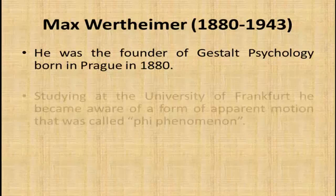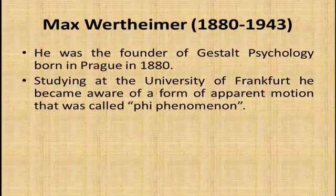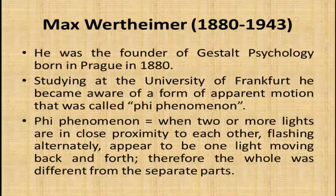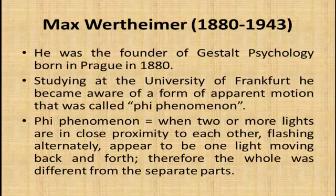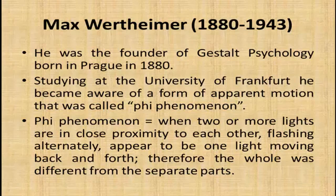Max Wertheimer was born in Prague in 1880. Studying at the University of Frankfurt, he became aware of a form of apparent motion called the Phi Phenomenon. In the Phi Phenomenon, when two or more lights in close proximity flash alternately, they appear to be one light moving back and forth. When a rapid sequence of flashing lights creates the illusion of motion, they look organized as a stream, but separately each light flashes independently.